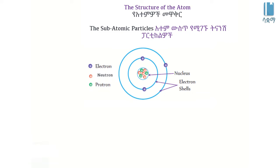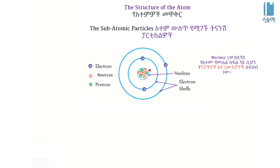The atom structure includes the nucleus. At that time we have an electron shell. This is an atomic nucleus. This is an electronic shell. This is a proton and a neutron. This is an electron.